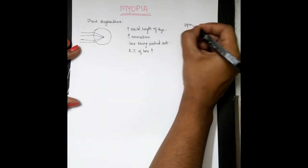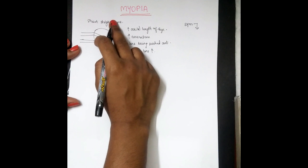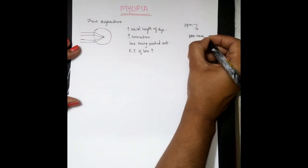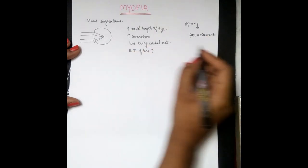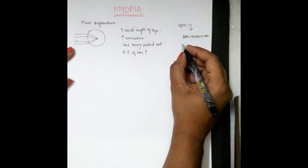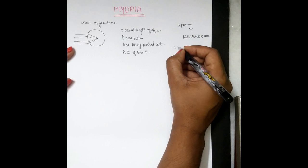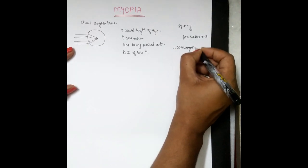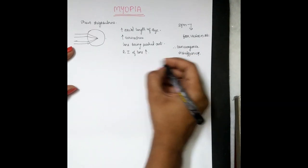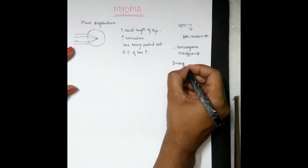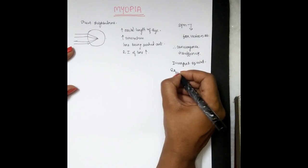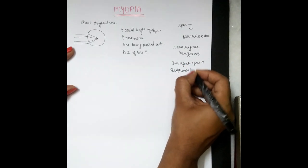Coming to the symptoms: in myopia or short-sightedness, the person develops difficulty in seeing far. For them, far vision has become a near point, so the person need not accommodate. Therefore they develop convergence insufficiency, and due to convergence insufficiency they develop divergent squint — that is exophoria or exotropia.